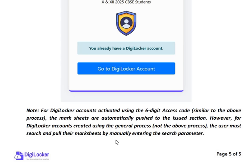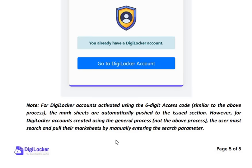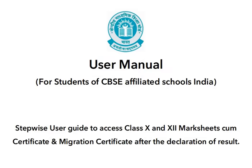However, for DigiLocker accounts created using the journal process, the user must search and pull their mark sheets by manually entering the search parameters. All students who have given their board exams for class 10th and 12th in March 2025 are requested to activate their DigiLocker account as soon as possible using the access code from the school. Best of luck for your results. Thank you very much.